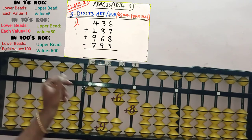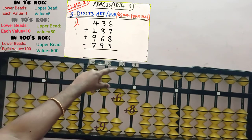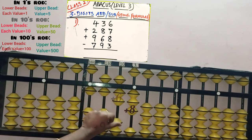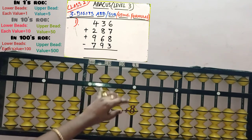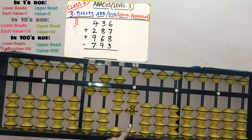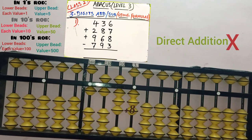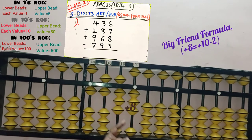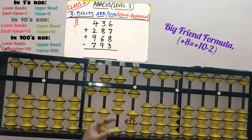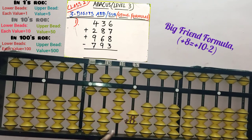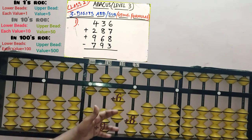Next, add 6 bits in the 10s slot — bits are available, so we can add 6 directly: 60 is added. Next, add 8 bits in the 1s slot — only 6 bits are available, so direct addition is not possible. Big friend is possible: 8's big friend is 2, so remove 2 and add the boss in the next slot — plus 10. 8 is added with big friend: plus 10 minus 2. 968 is added.